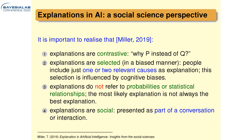What we started with was a paper now cited very often from Tim Miller, who looked at explainable AI from a social sciences perspective. His idea was that AI people are interested in explanation, but social sciences already know a lot about how people explain things to one another. He said it's important for AI researchers to realize that explanations should be contrastive — not just explain why P is the case, but also why it is not something else.